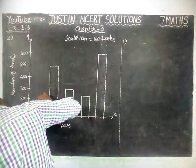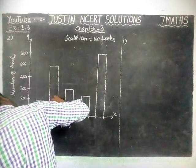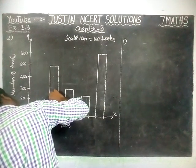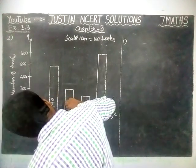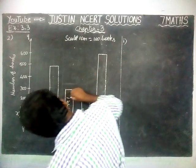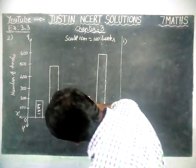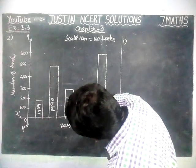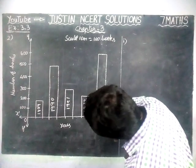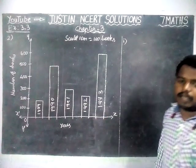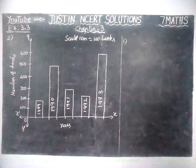The years shown on the bar graph are: 1989, 1990, 1991, 1992, and 1993. Now we are going to find answers for the given questions.